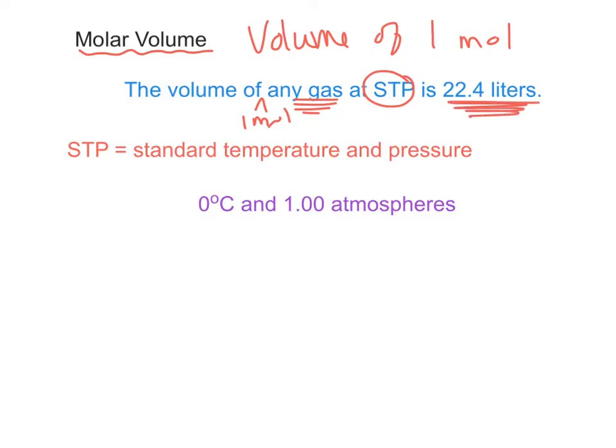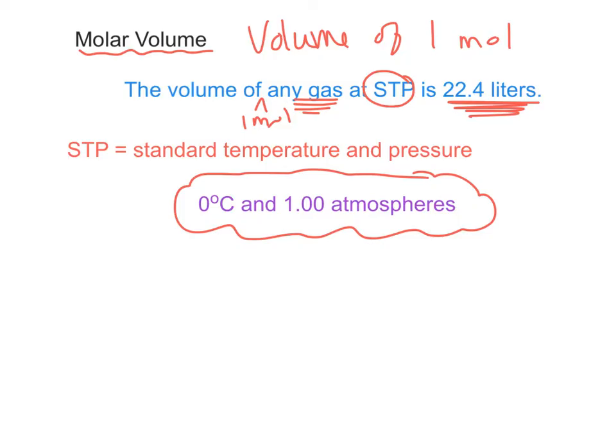What is STP? It means standard temperature and pressure, and it is 0 degrees Celsius and 1 atmosphere. The exact numbers aren't really important right now, but they will be in a later chapter.